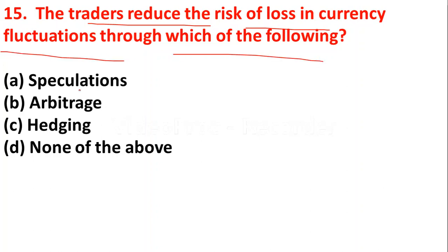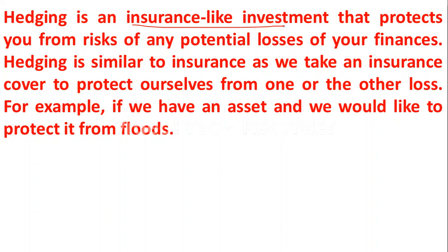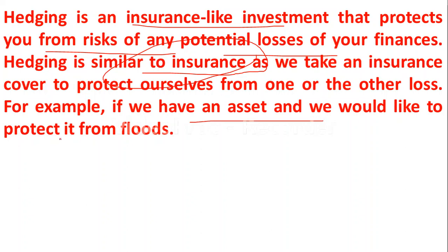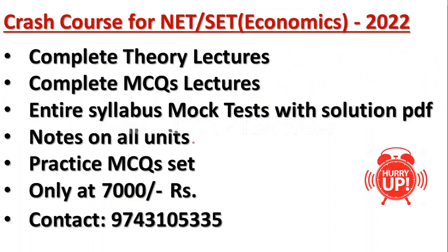The next question: traders reduce the risk of loss in currency fluctuations through which of the following? Option A: speculation, option B: arbitrage, option C: hedging, option D: none of the above. The answer is option C — hedging. Hedging is an insurance-like investment that protects you from the risk of any potential losses in your finances. For example, if we have an asset we would like to protect it from adverse events.